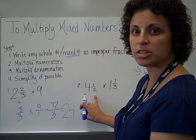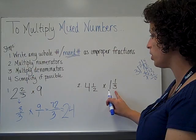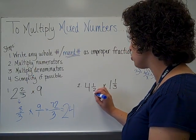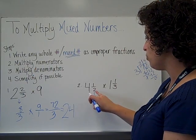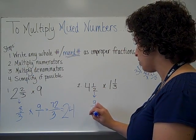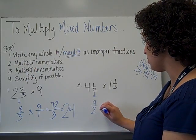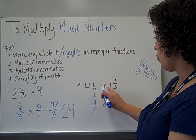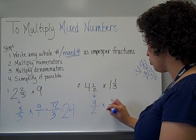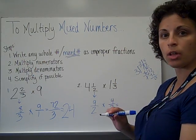All right, another example. 4 and 1 half times 1 and 1 third, this time 2 mixed numbers, but I'm just going to turn each of them into an improper fraction. 4 times 2 is 8, plus 1 is 9, over 2, denominator stays the same, times, 1 times 3 is 3, plus 1 more is 4, 4 over 3. All right.